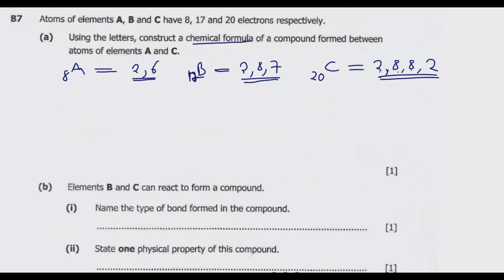So from the electronic configurations: element A is a non-metal, element B is a non-metal, and element C is a metal. Now we are trying to write a formula for the compound formed between A and C.